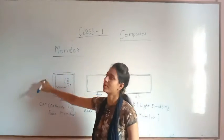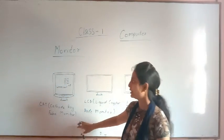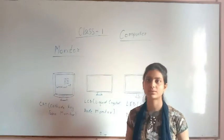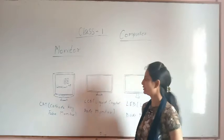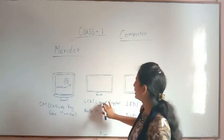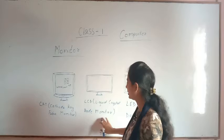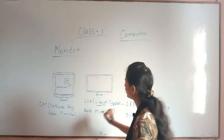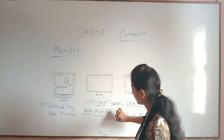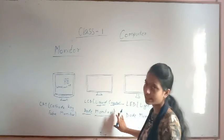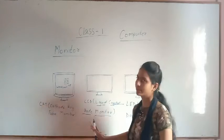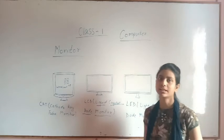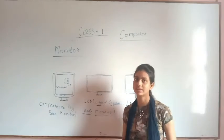Earlier, CRT monitors were used. Then, as time passed gradually, it came to LCD — Liquid Crystal Diode monitor. L for Liquid, C for Crystal, D for Diode. So it is known as the LCD — Liquid Crystal Diode monitor. CRT was made first, and then after that LCD came.